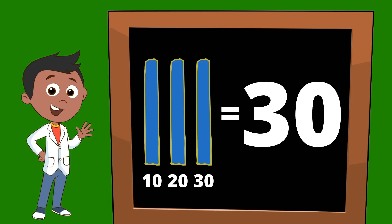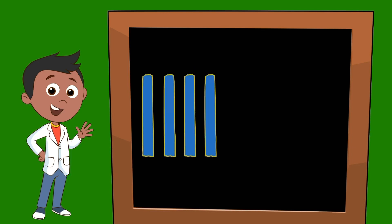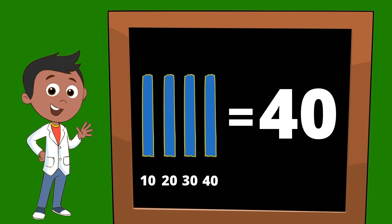Let's add one more. Four ten sticks would be equal to ten, twenty, thirty, forty. Four ten sticks would be equal to forty.